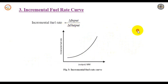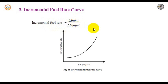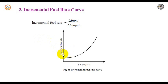The next curve is the incremental fuel rate curve. The incremental fuel rate is defined as the ratio of the small change in input divided by the corresponding change in the output — that is, delta input by delta output. The units are British thermal units (BTU) per kilowatt hour, and the output is in megawatt.